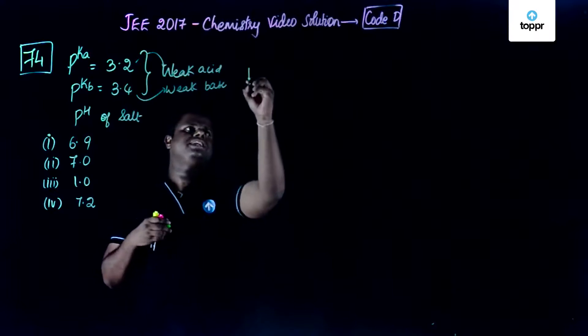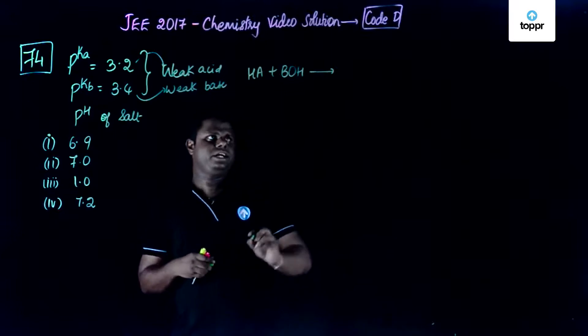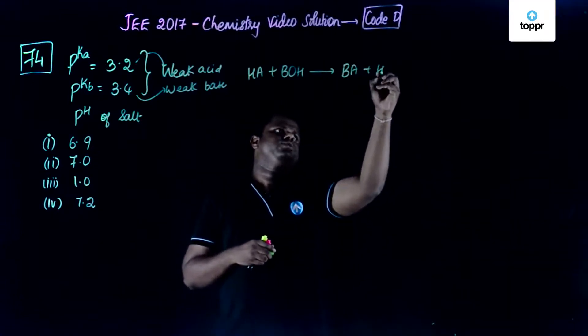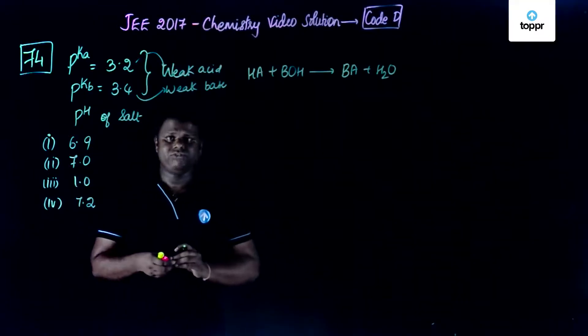So let's say if the weak acid is HA and the weak base is BOH, what could be the salt? The salt could be something like BA plus H2O. Now the resultant solution should have a pH. That's what you're supposed to find out.